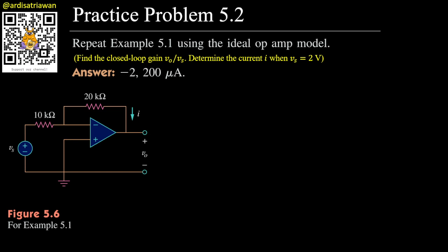Hello, my name is RD and we are going to solve practice problem 5.2 from Sadiku's textbook. The question is: repeat example 5.1 using the ideal op amp model. The question in example 5.1 is to find the closed loop gain v0 over vs and then determine the current i when vs is equal to 2 volts.